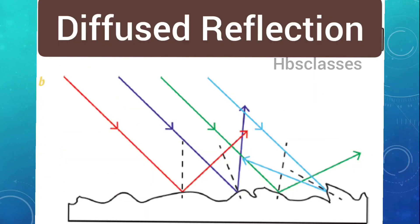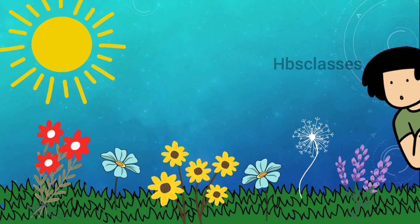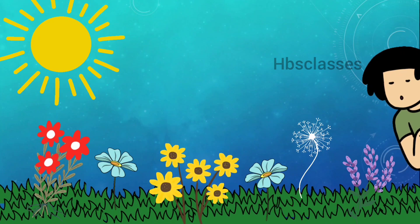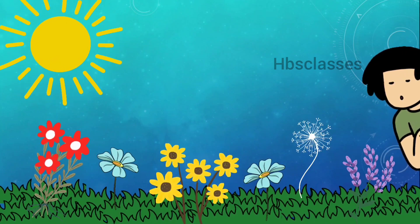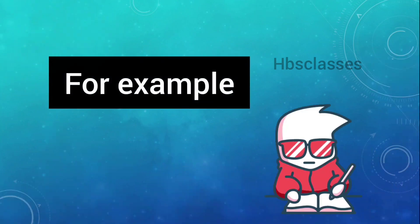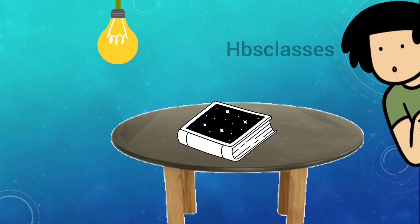Most of the objects around us cause diffuse reflection of light and scatter the light falling on them in all directions. In fact, we can see these objects only because they scatter light rays falling on them in all directions. For example, a book lying on a table can be seen from all parts of the room due to diffuse reflection of light from its surface.